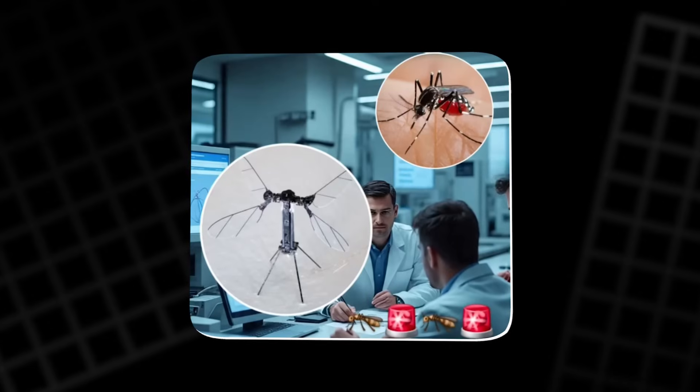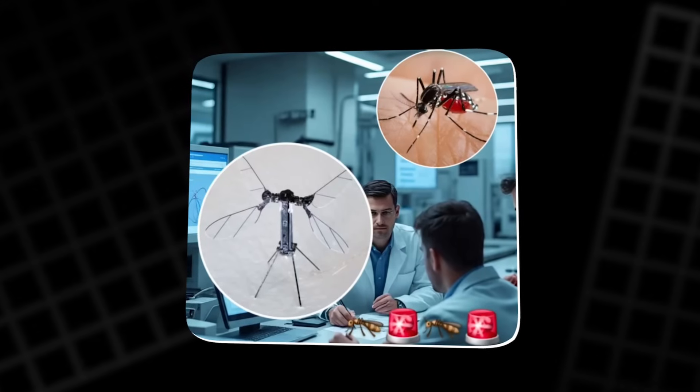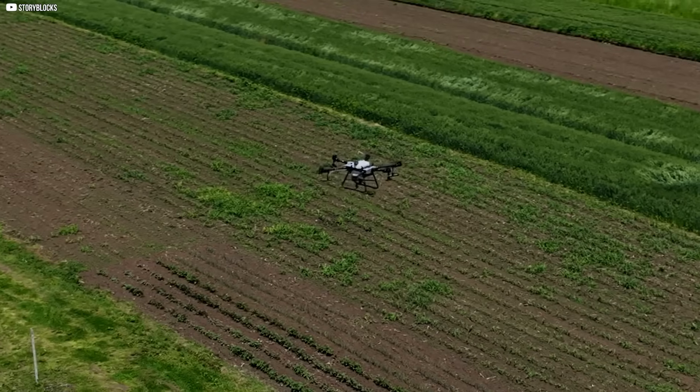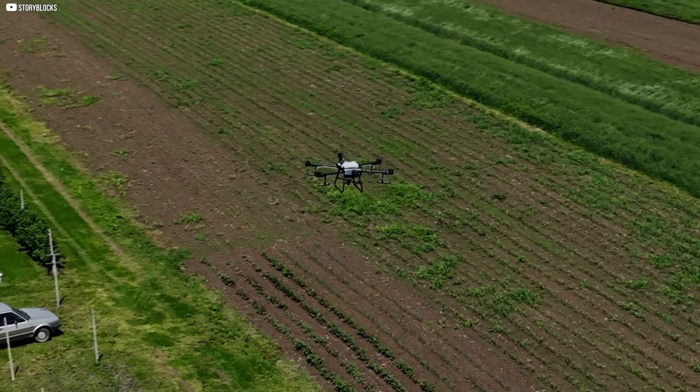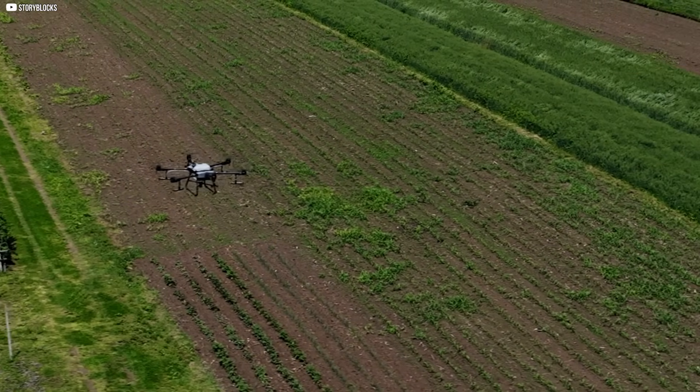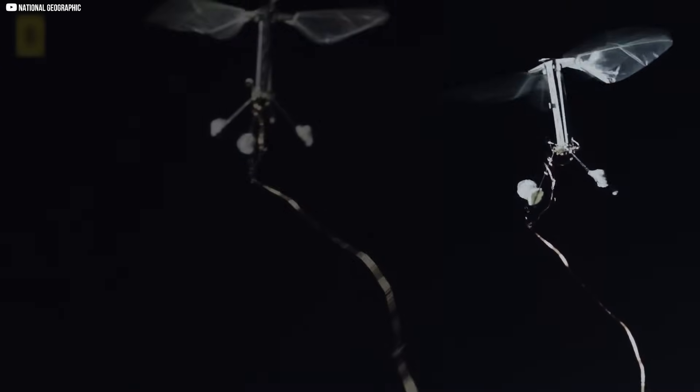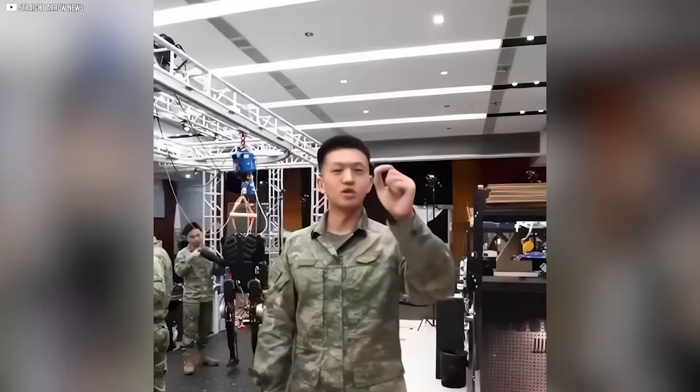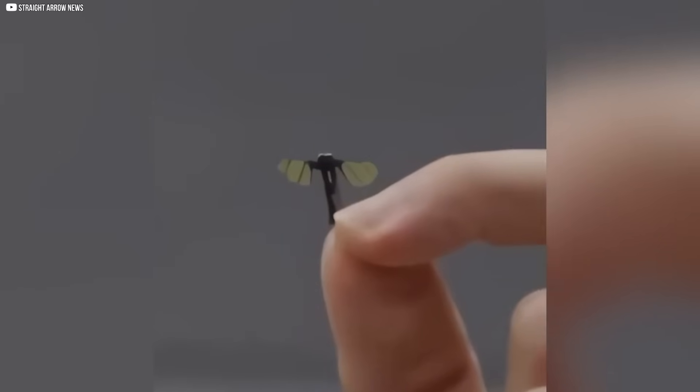In medical applications, it could be used to image blood vessels from within the body, while in agriculture, it might sneak under dense rice canopies to track pests. The Mosquito's versatility opens up new possibilities for surveillance across various fields, bridging military technology with civilian innovations.